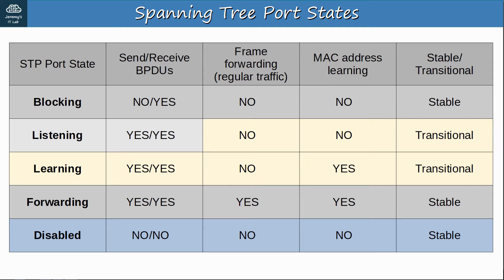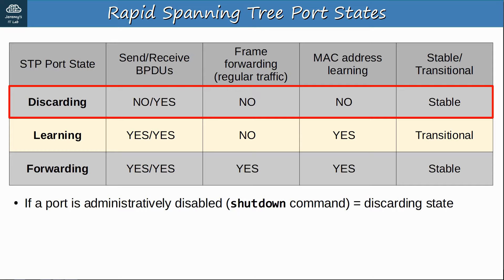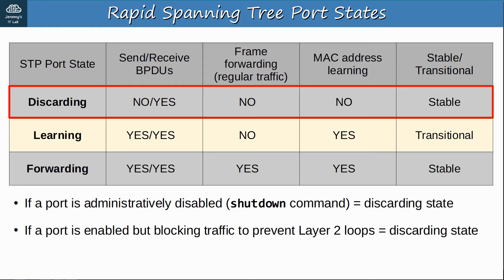Here's the slide of classic spanning tree port states from Day 21. Rapid spanning tree simplifies the port states, reducing them to just three by combining three states into one. The blocking, listening, and disabled states are combined: more accurately, blocking and disabled become the discarding state, and the listening state is simply not used. If a port is administratively disabled — meaning the shutdown command is applied — it will be in a discarding state in RSTP. If a port is enabled but blocking traffic to prevent layer 2 loops, it is also in a discarding state.